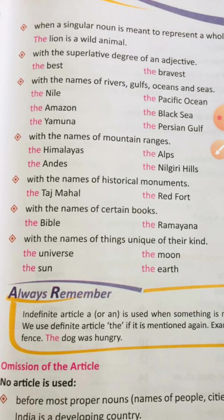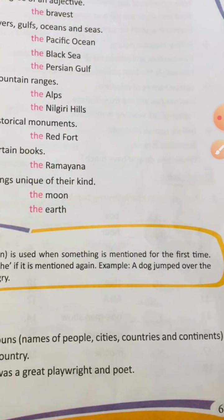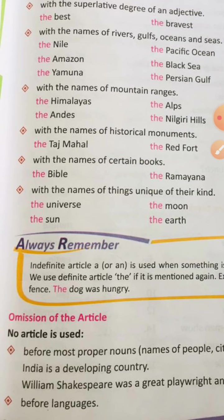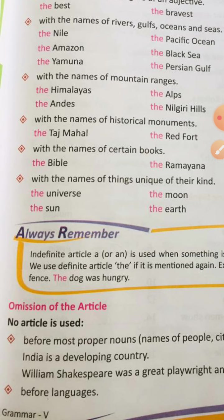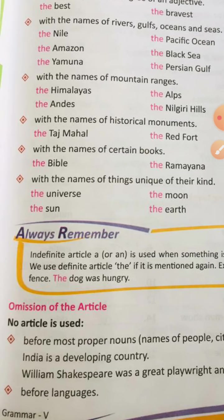Now, one very important point: omission of articles. No article is used before most proper nouns — names of people, cities, countries, and continents. For example, 'India is a developing country' — we do not say 'a India' or 'the India'. Similarly, 'William Shakespeare was a great playwright and poet' — we do not use 'a William Shakespeare' or 'the William Shakespeare'.